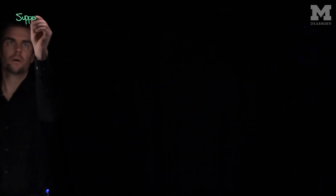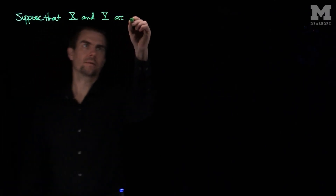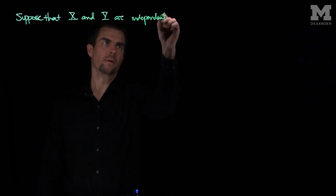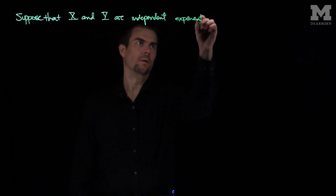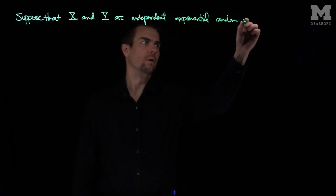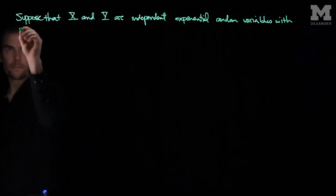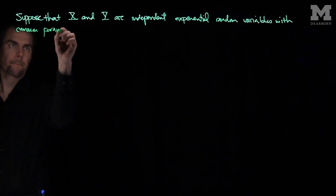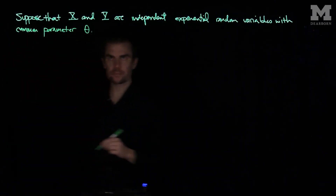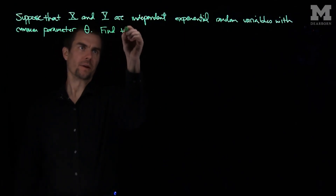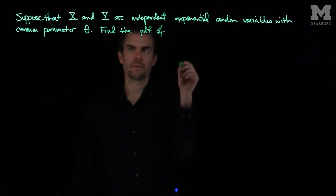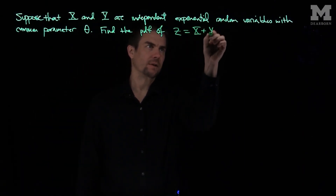Hello students. In this video we'll see an example of computing the sum of two independent exponential random variables. Let's suppose that x and y are independent exponential random variables with a common parameter theta. Let's find the PDF of the random variable z, which is the sum of x and y.